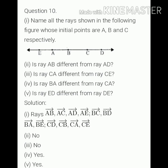Part five is, is ray ED different from ray DE? Yes, it is different. Because their origin points are also different. ED ray emerges from point E and DE ray emerges from point D. So these are different rays.